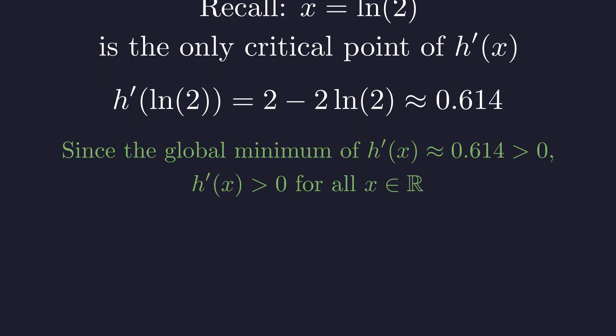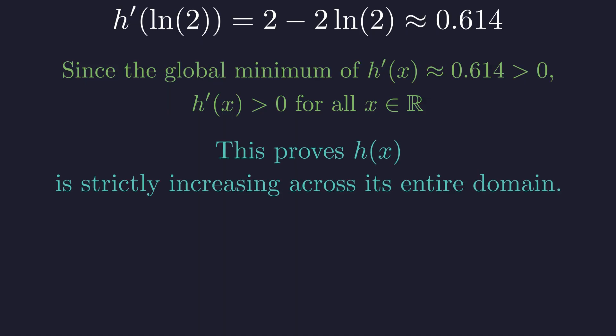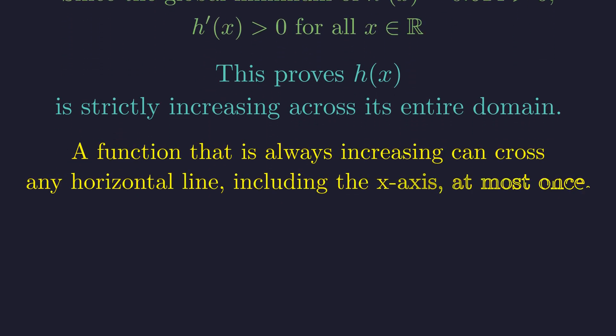We found that minimum value is approximately positive 0.614. Since the lowest value the derivative ever reaches is positive, h prime of x must be positive for all real numbers. This proves h of x is strictly increasing across its entire domain. A function that is always increasing can cross any horizontal line, including the x-axis, at most once. Therefore, the solution guaranteed by the intermediate value theorem is absolutely unique.